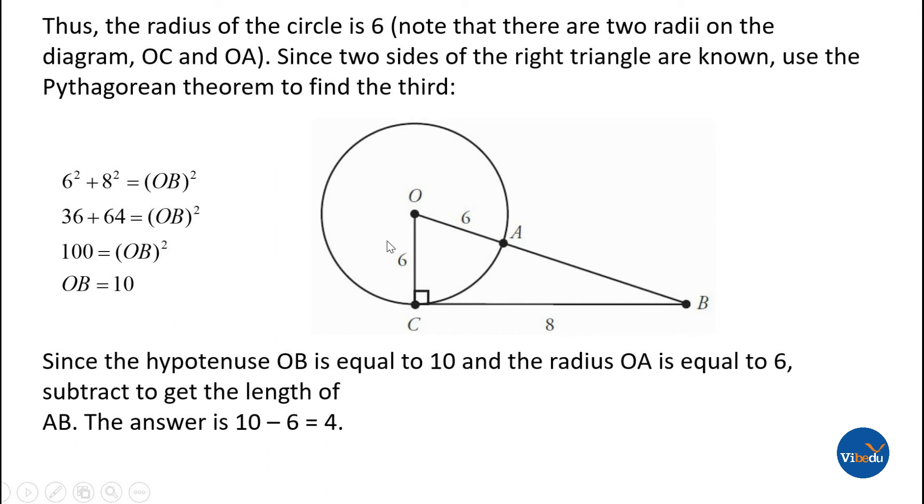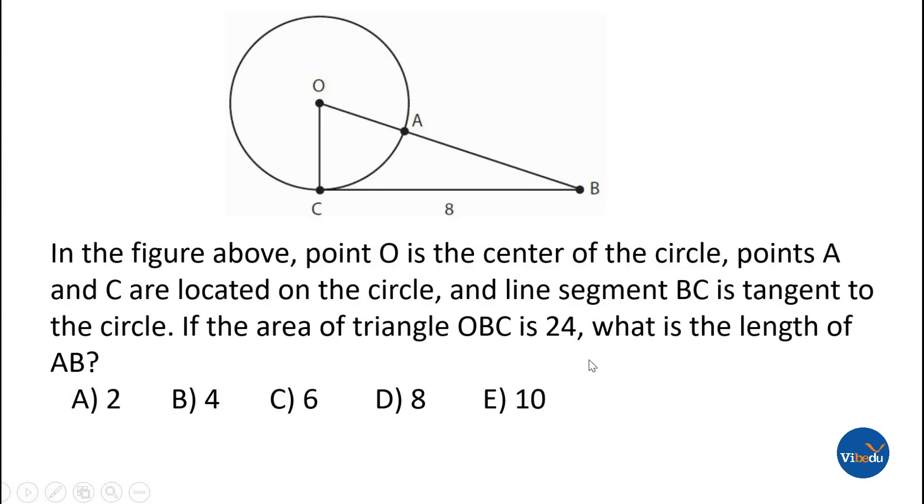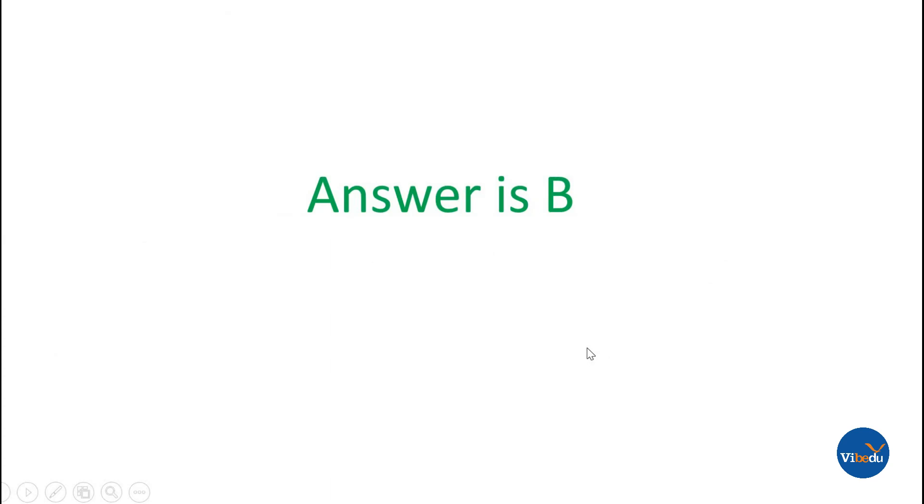Since you already found the radius OA equals 6, and OB is 10, then 10 minus 6 equals 4. That means AB equals 4. The correct answer is option B.